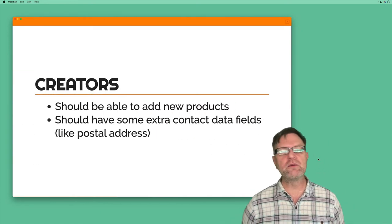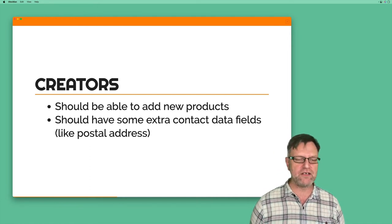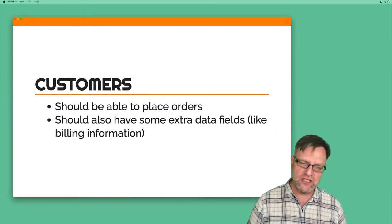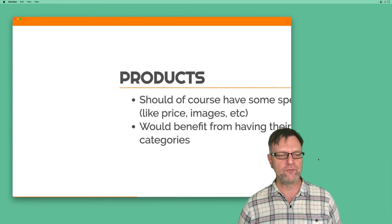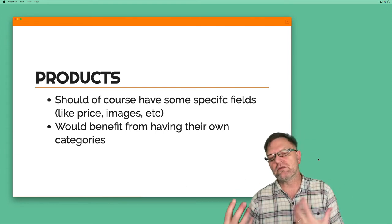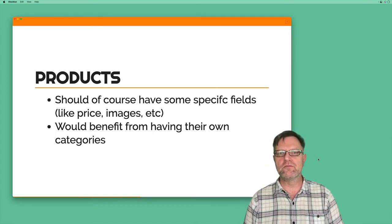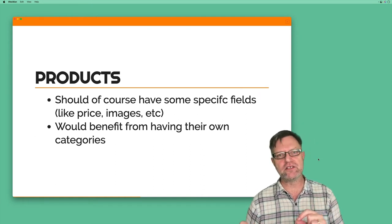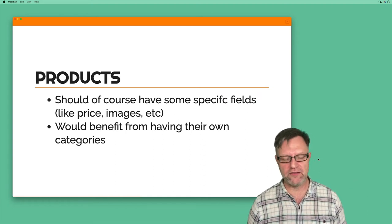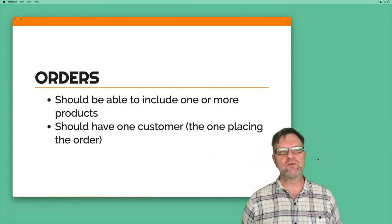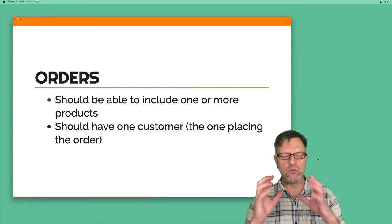Creators should be able to add new products and have specific extra data fields, like a postal address. Customers should be able to place orders and also have extra data fields, like billing information. Products should of course have fields too, like price, image, and weight. Products may also benefit from having their own category, so you can have specific categories just for products. Finally, orders should be able to include one or more products, and one customer should be associated with placing the order.